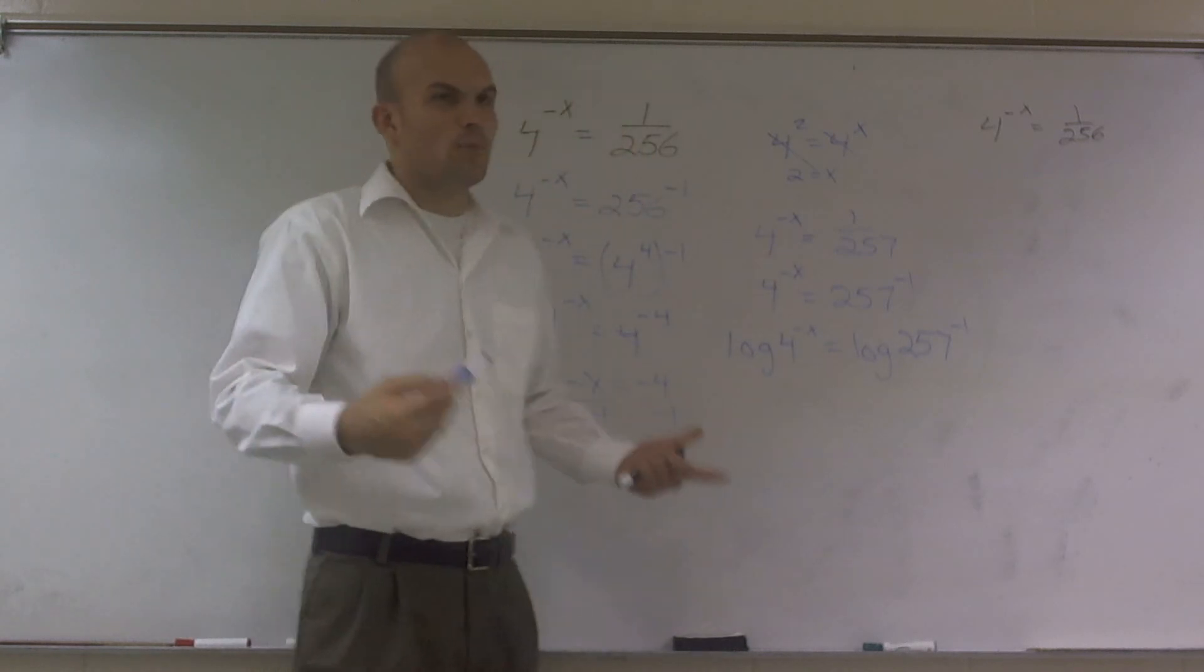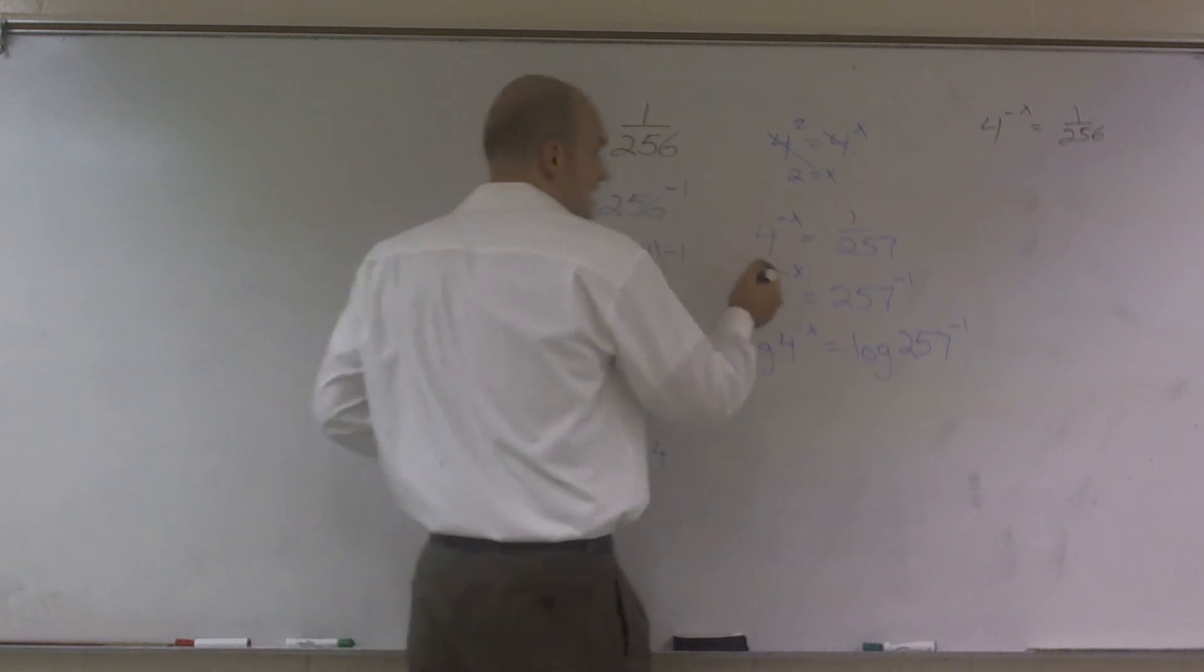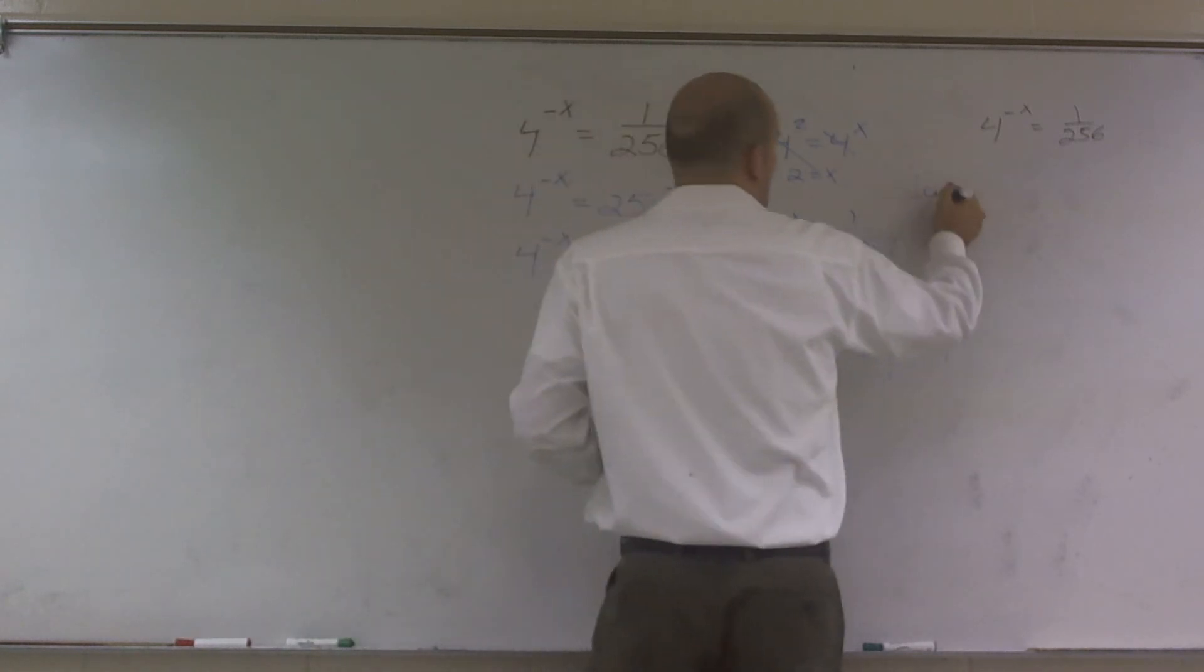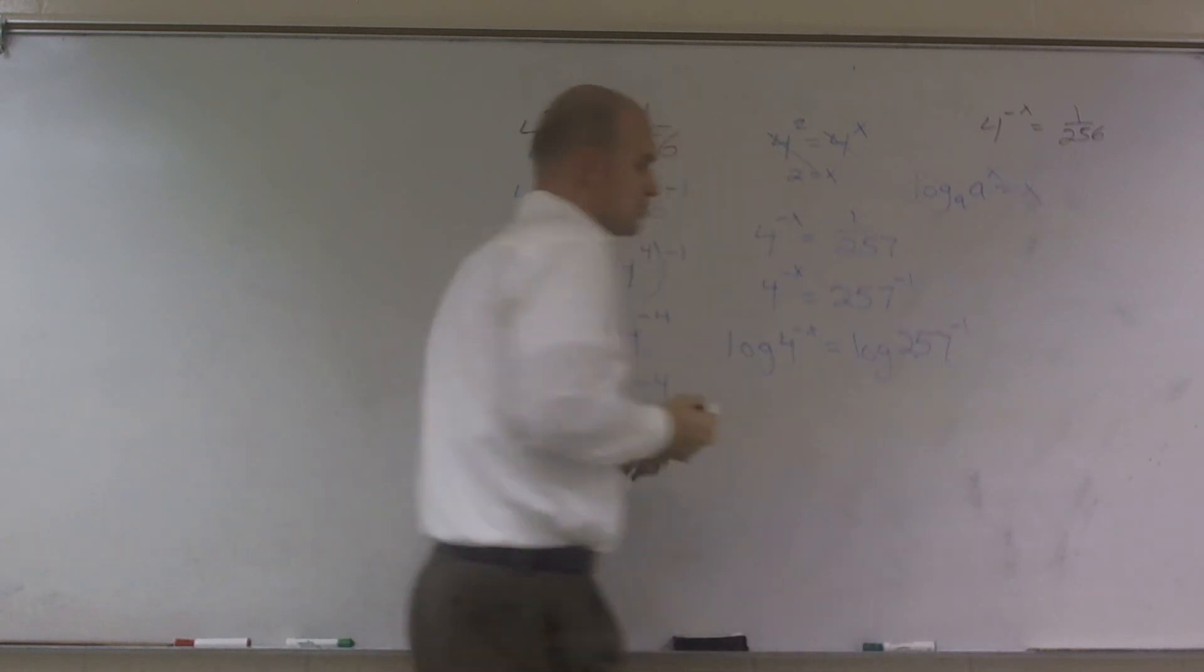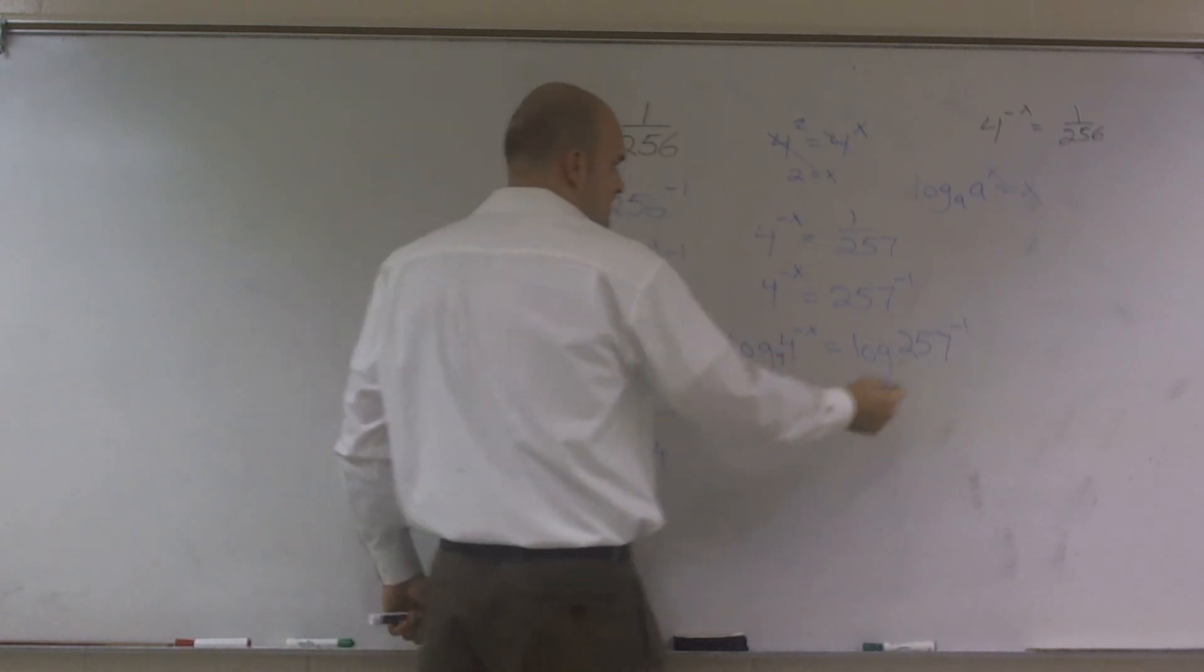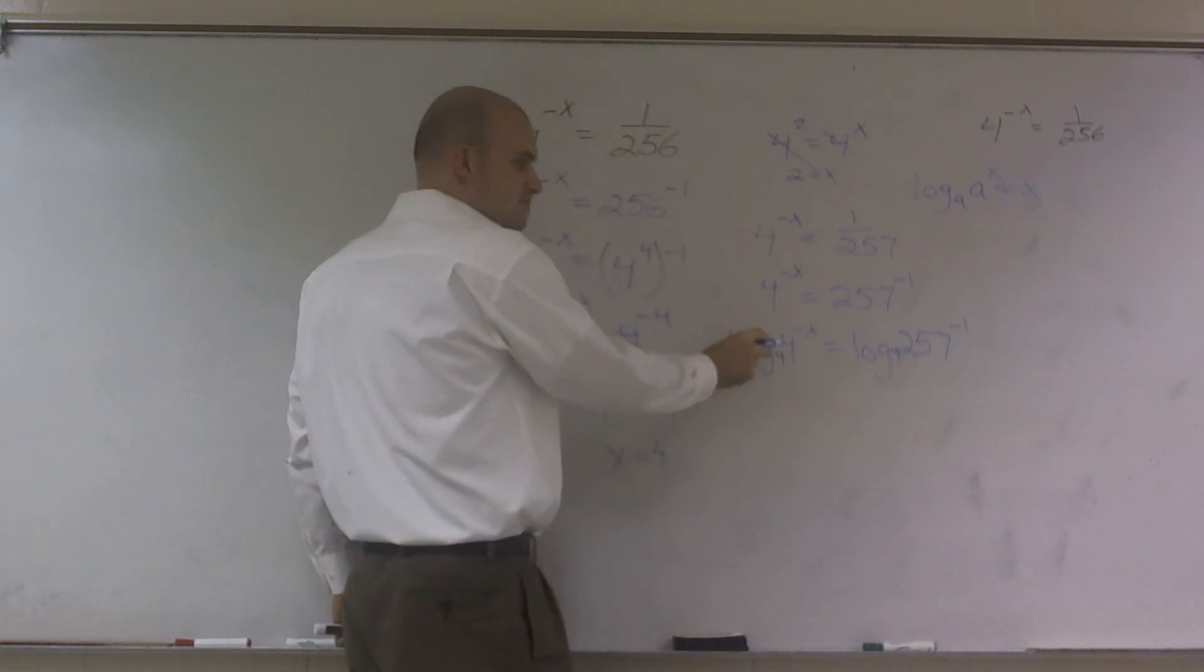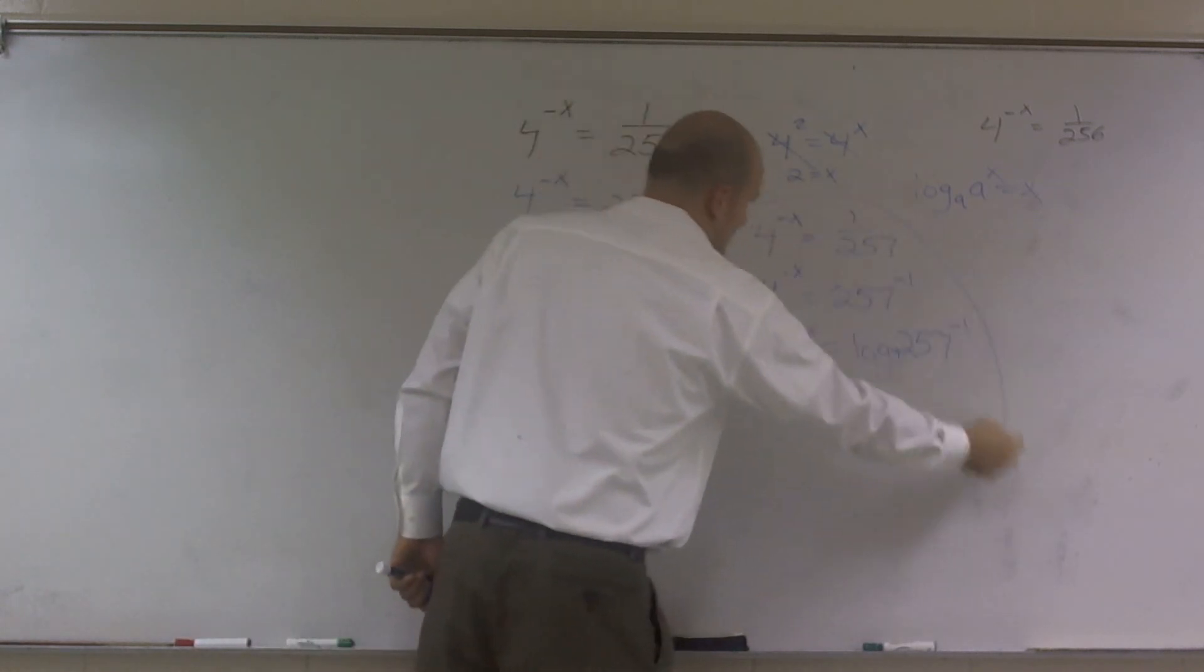Then what base of logarithm would I want to use? By knowing my properties of logarithms, I know that log base a of a raised to the x equals x. So I'd want to pick my base to be the same as what I'm evaluating for because this is now going to cancel out and leave me a negative x.